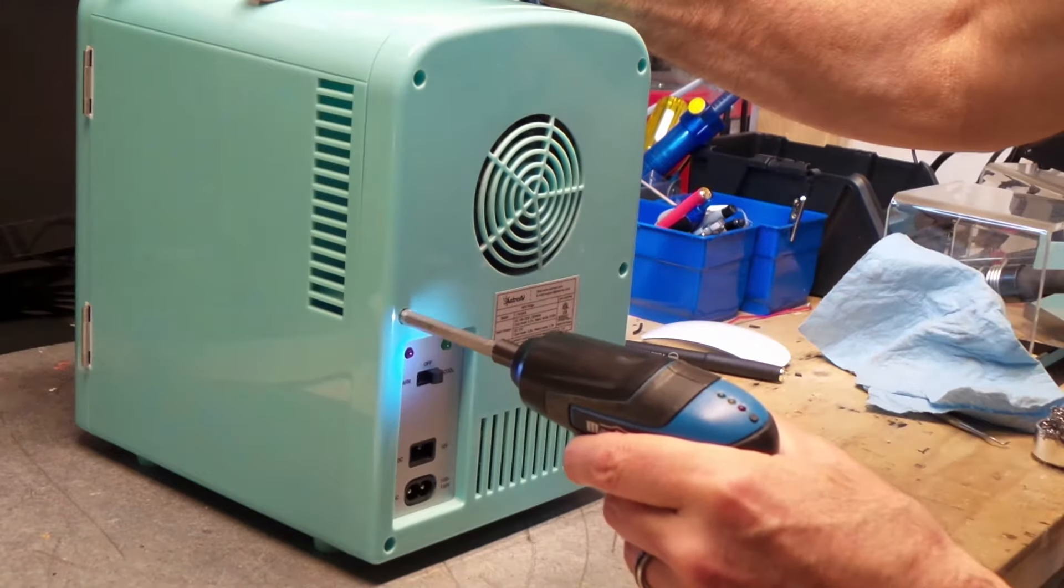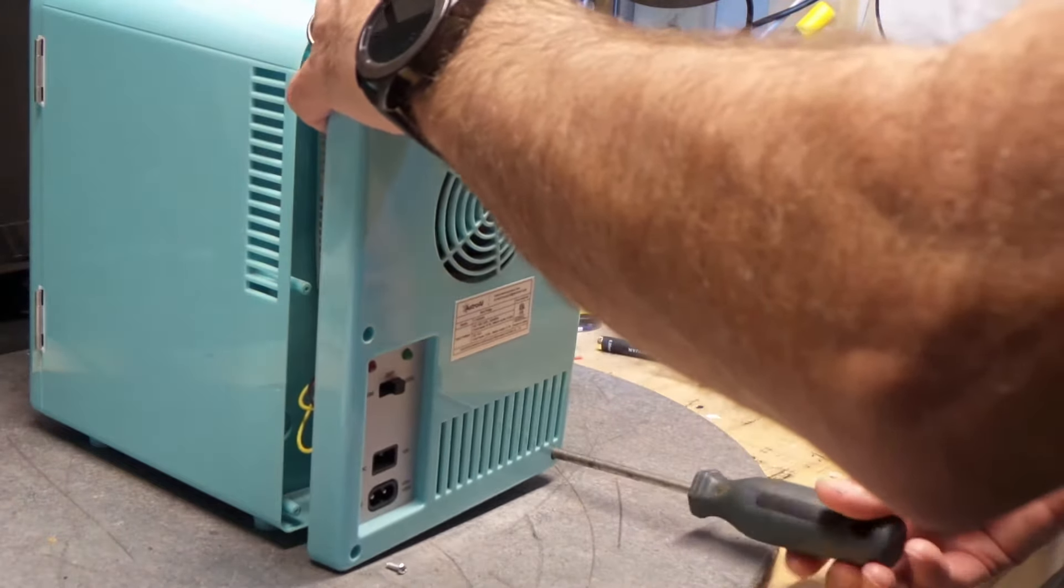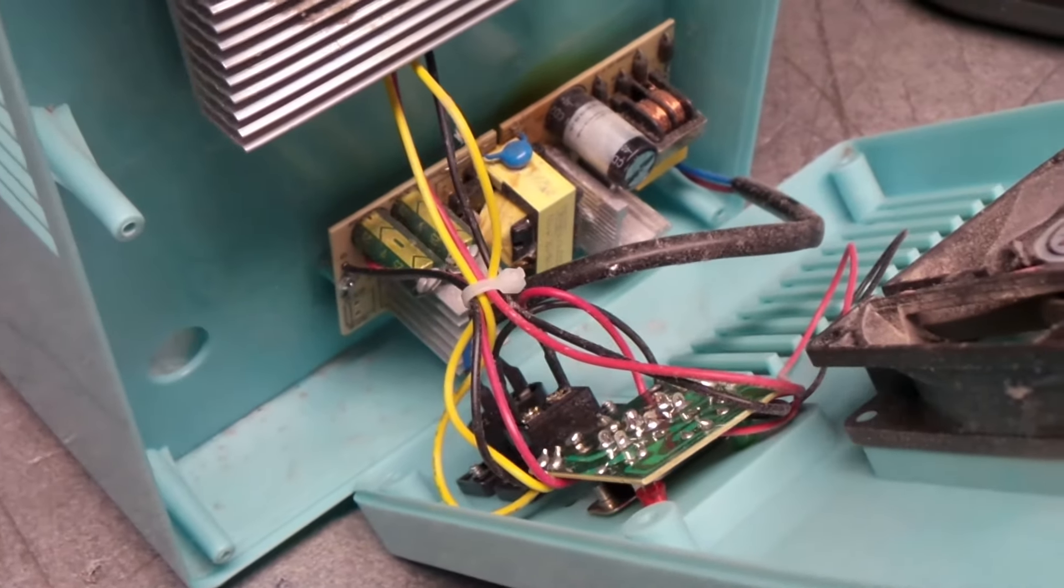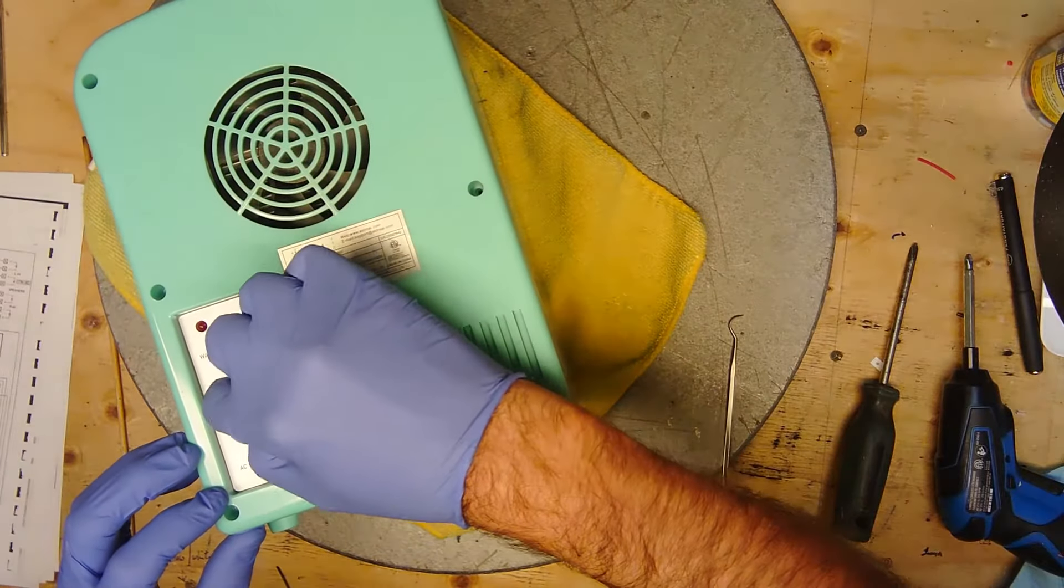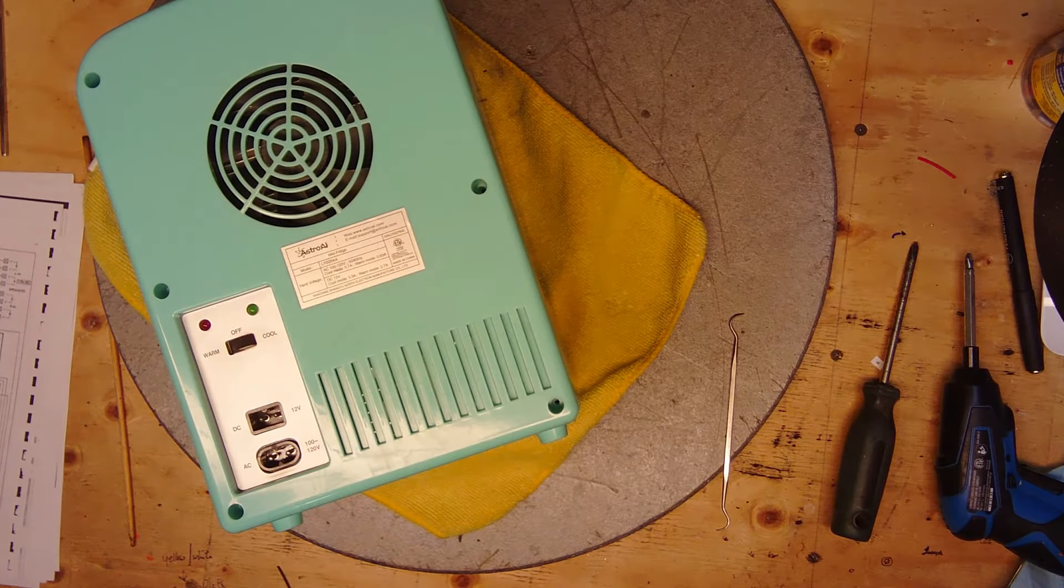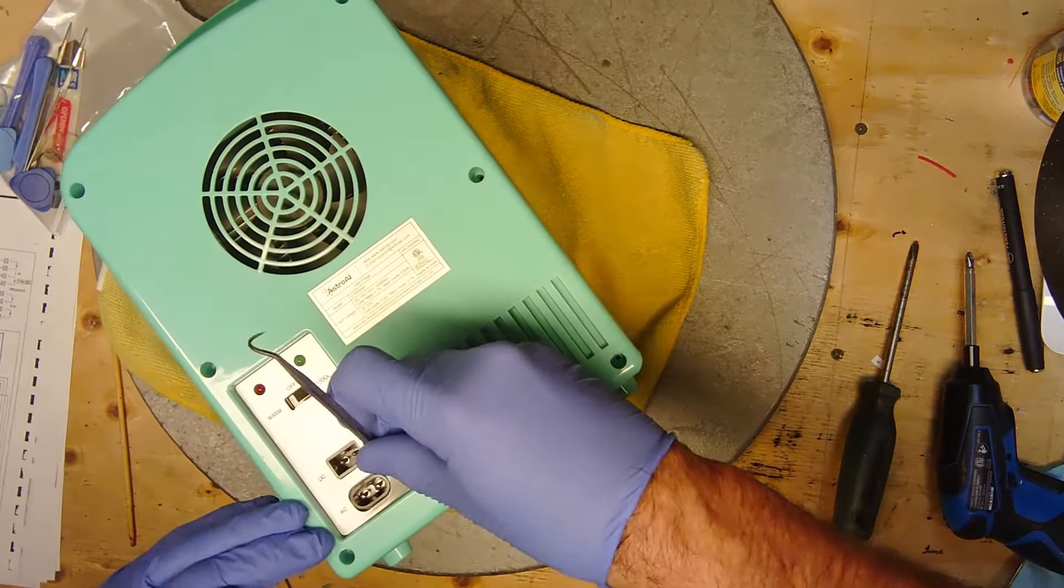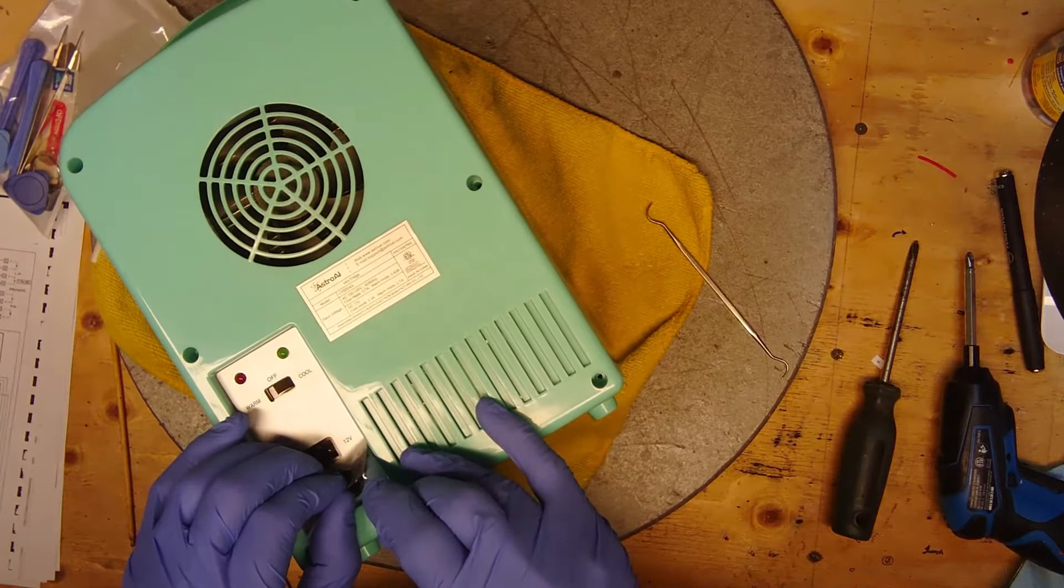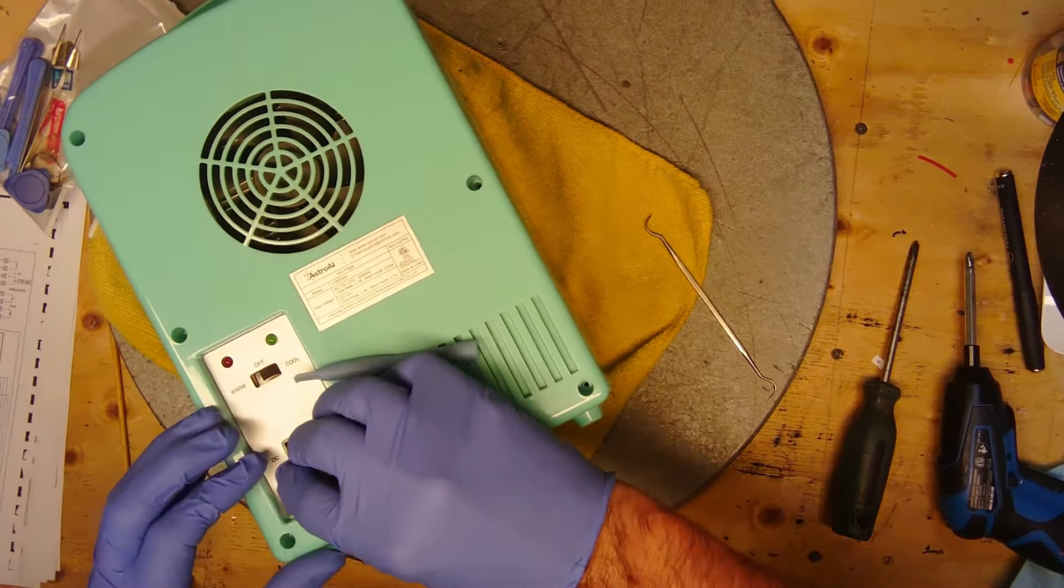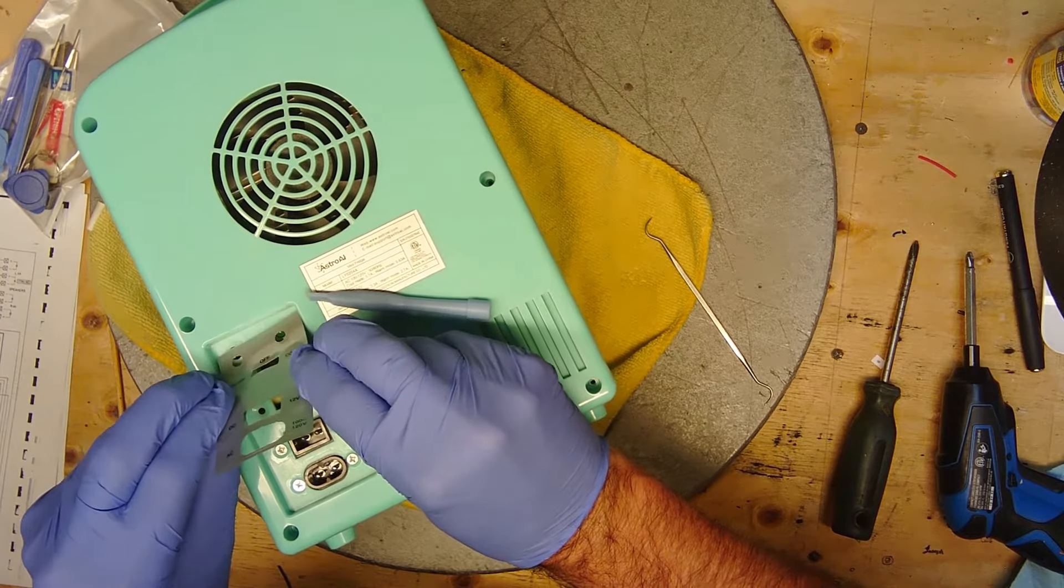We'll open this up and see what we can find. The screws are behind this cover. So I need to take this cover off in order to get to the screws. I'm gonna try to do this as gentle as I can. We'll just glue it back in.